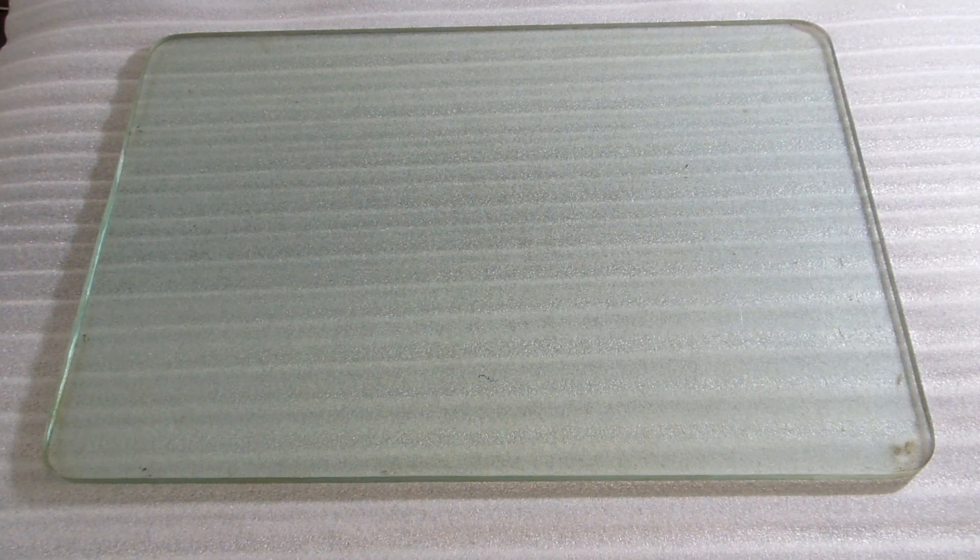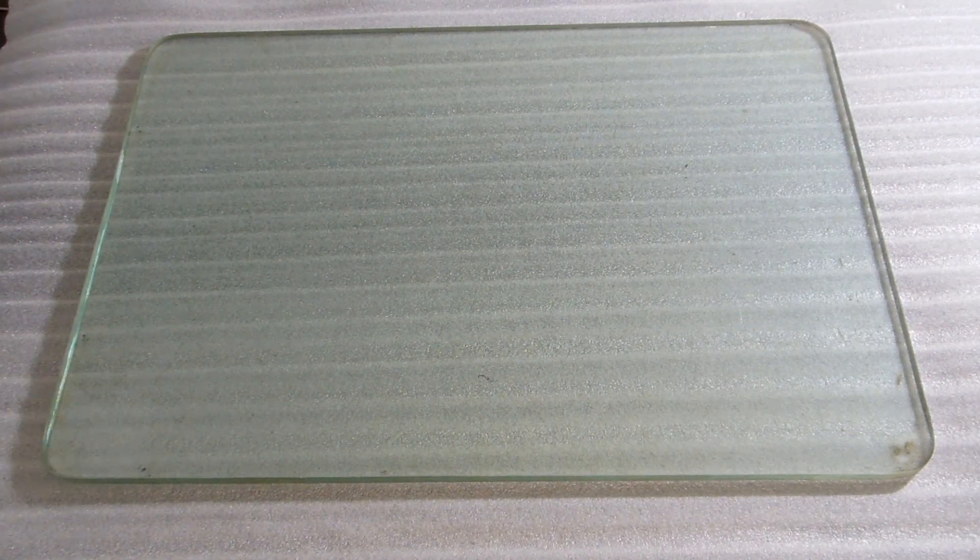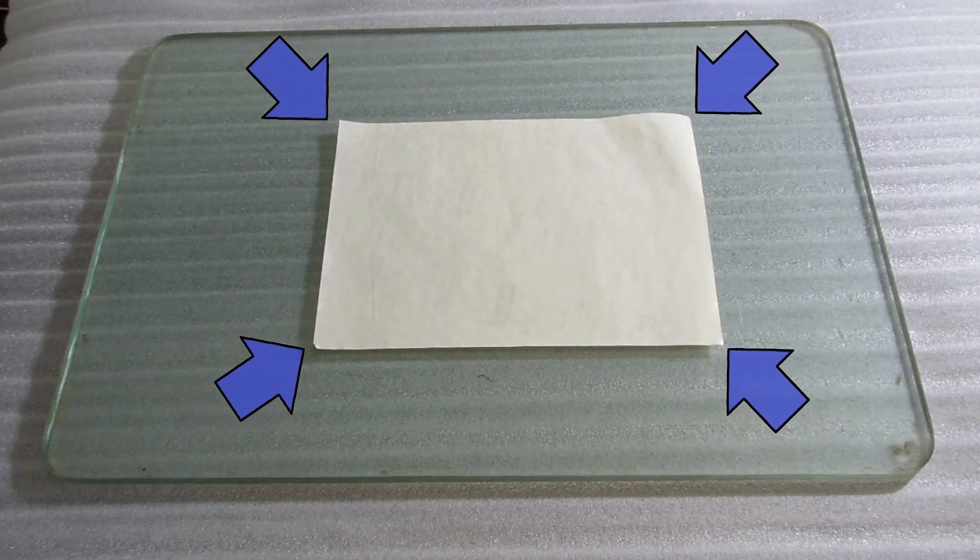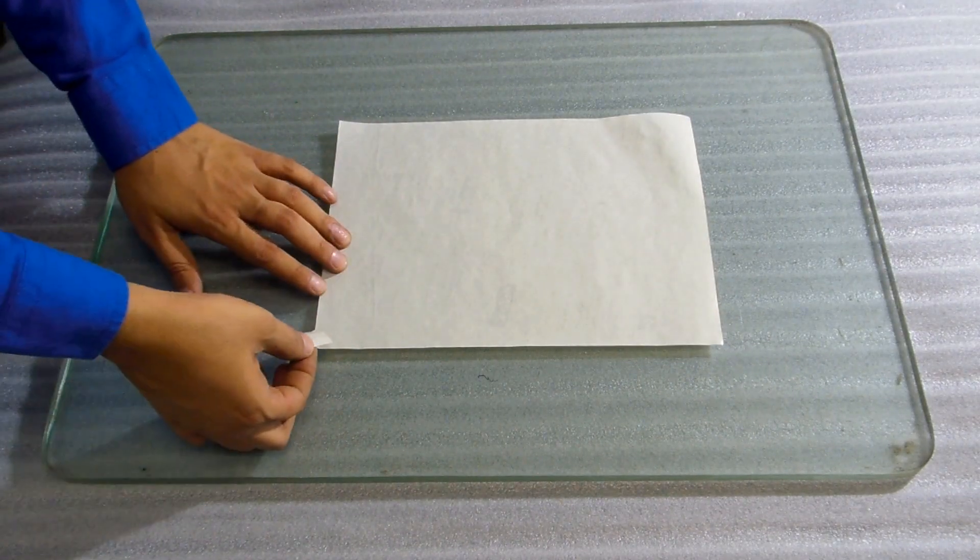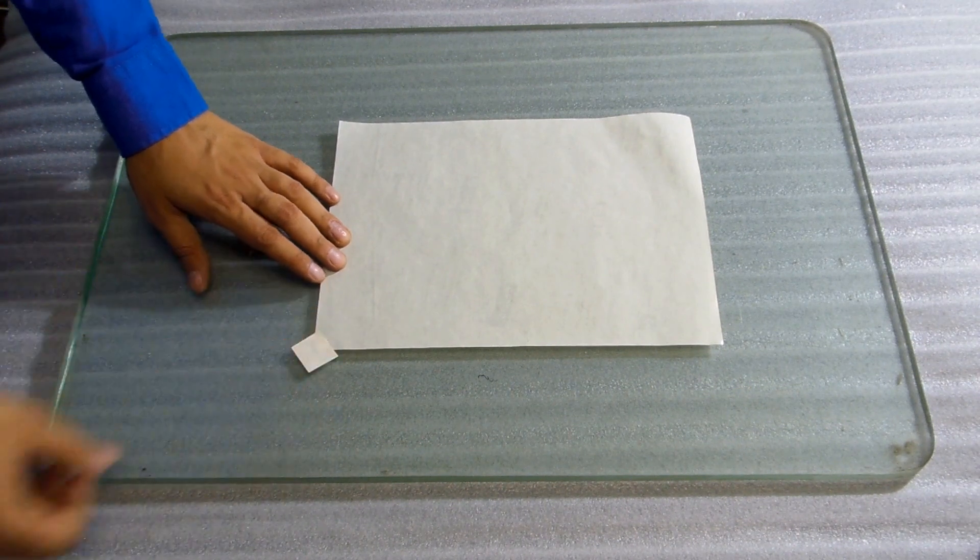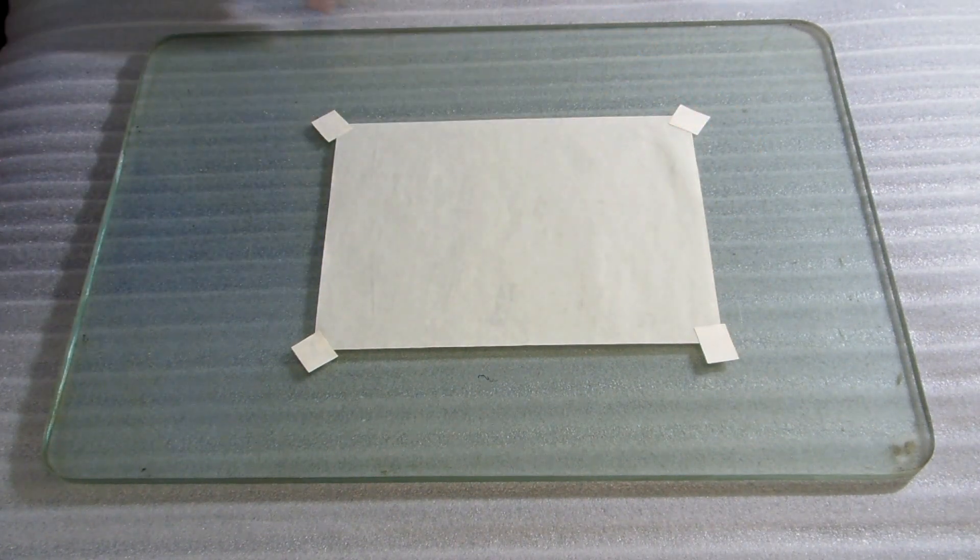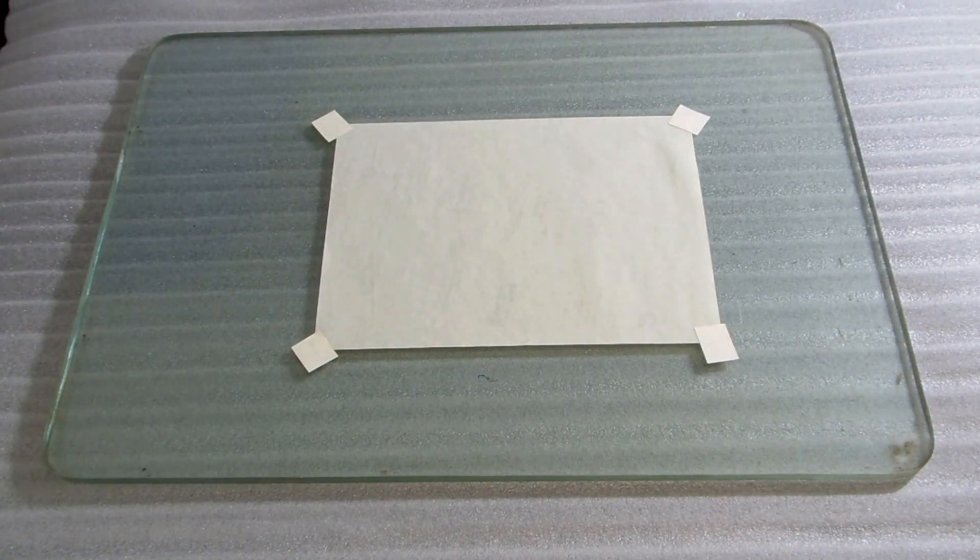Place a sheet of silicone release paper. Apply pieces of adhesive tape to hold the paper in place. Discard the top 3 to 6 layers of the tape.